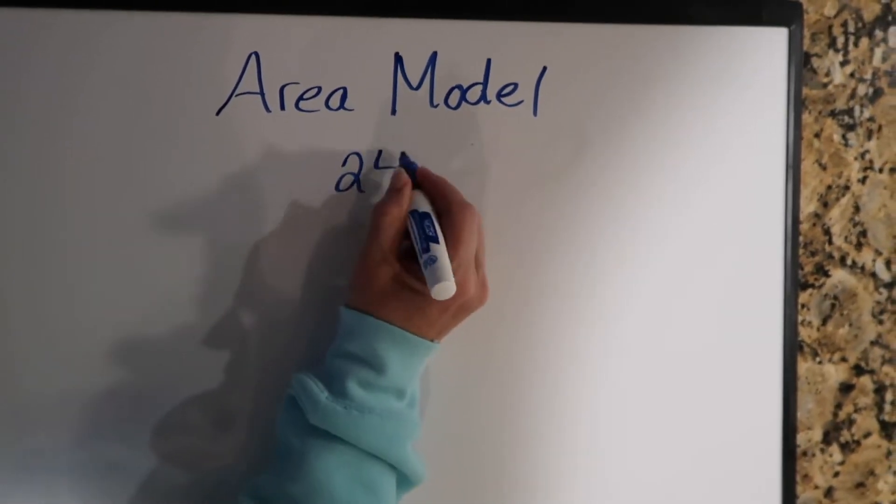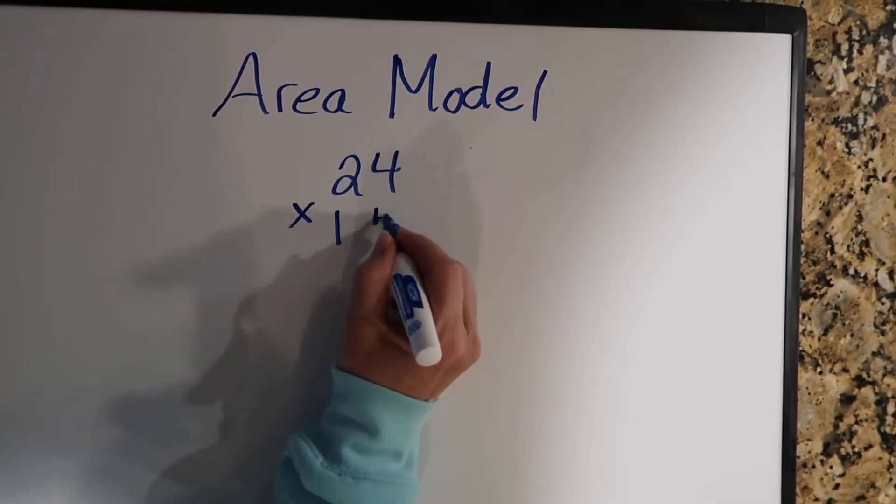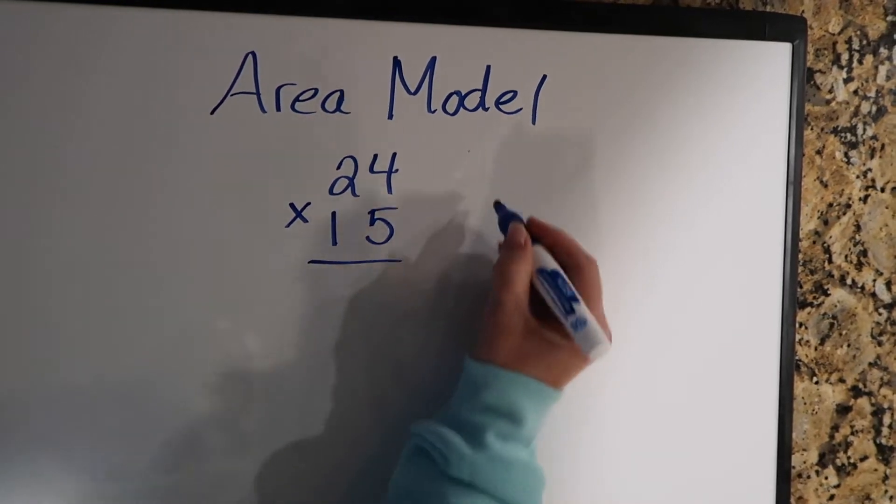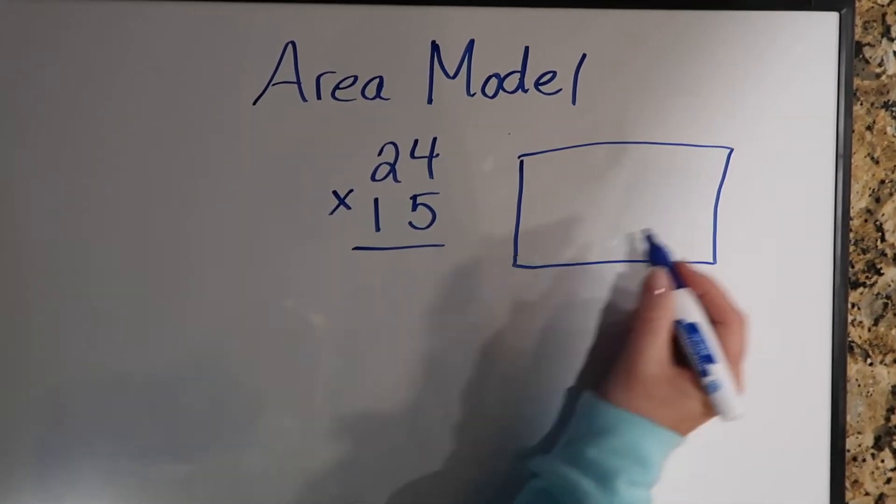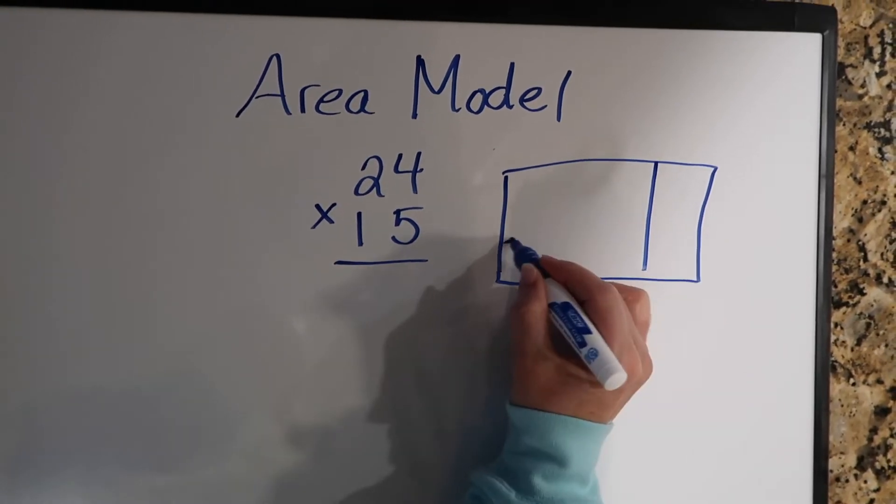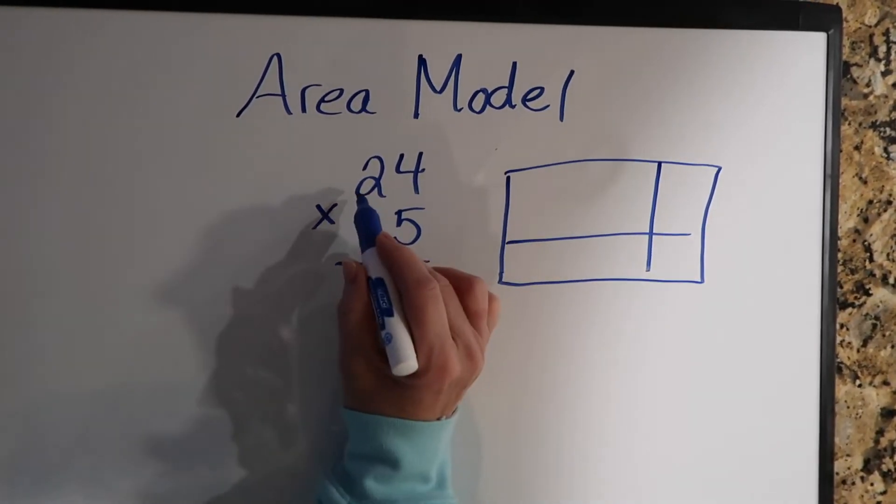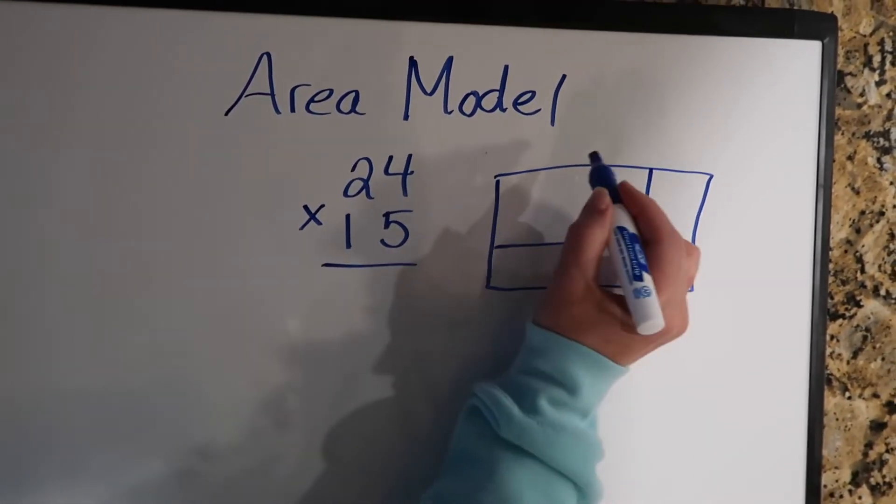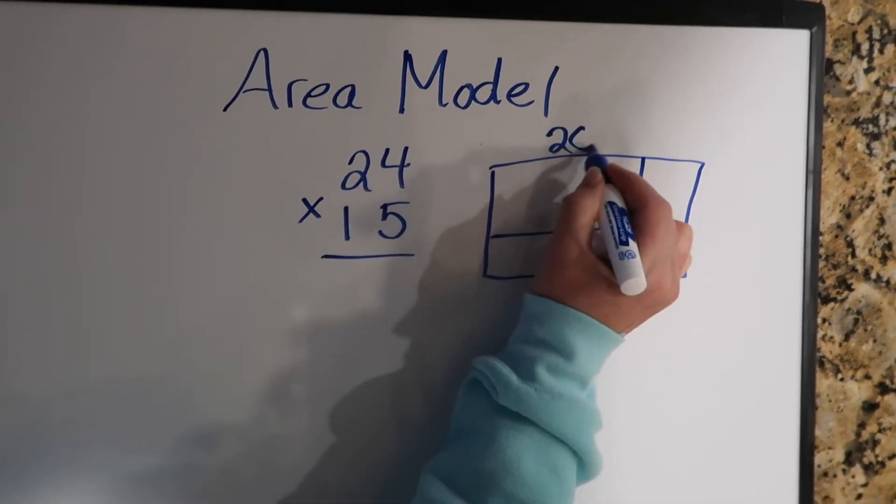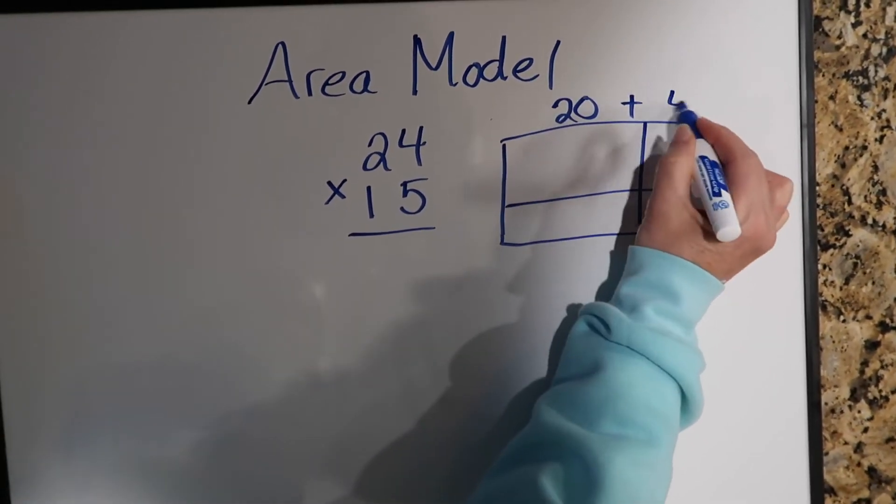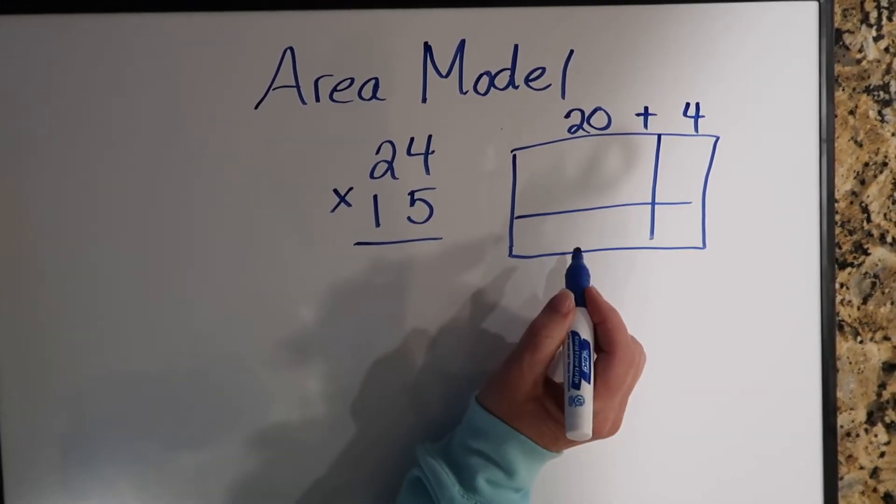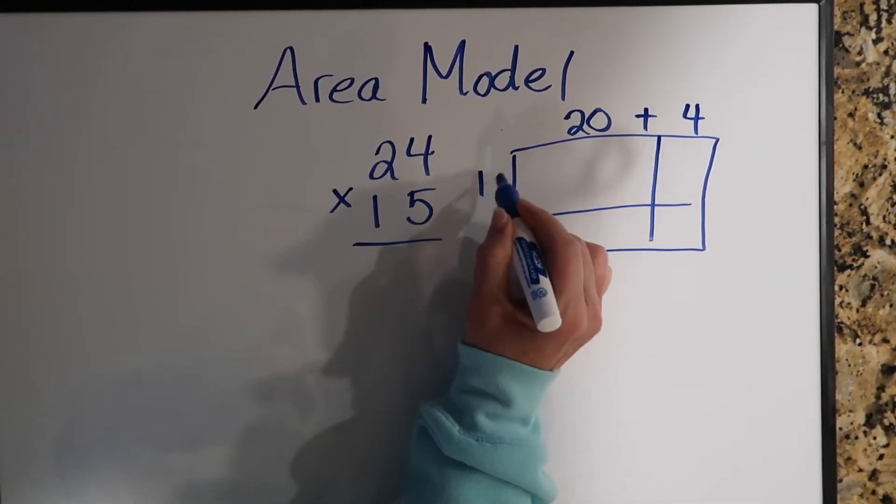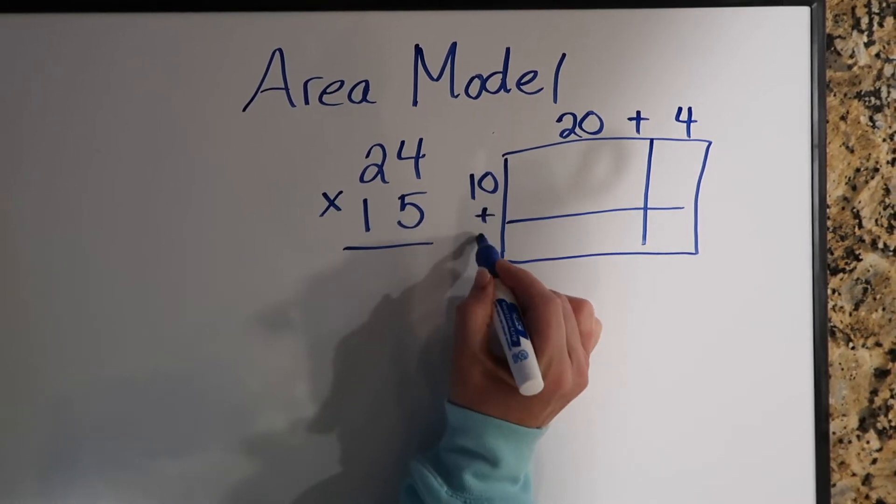Our equation is going to be 24 times 15. Let's draw our area model. We're going to take the first number, which is 24, and we're going to break it up into expanded form, 20 plus 4. We're going to take the second number and break that up also in expanded form, 10 plus 5.